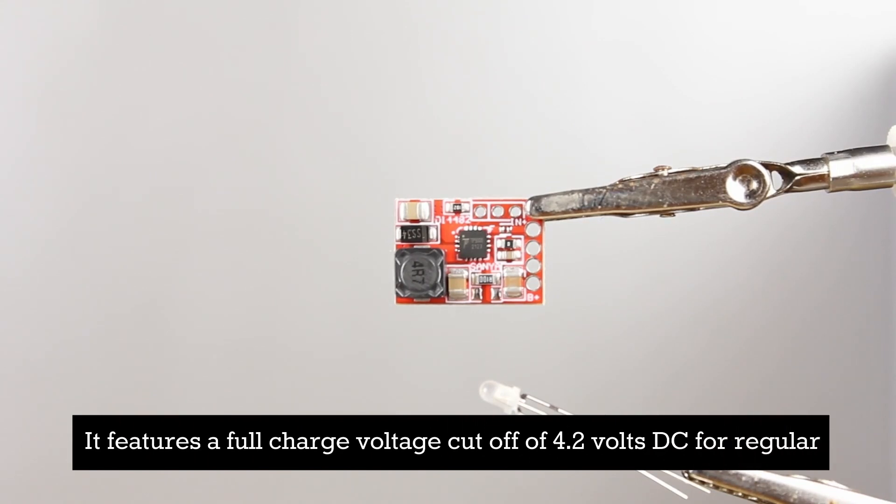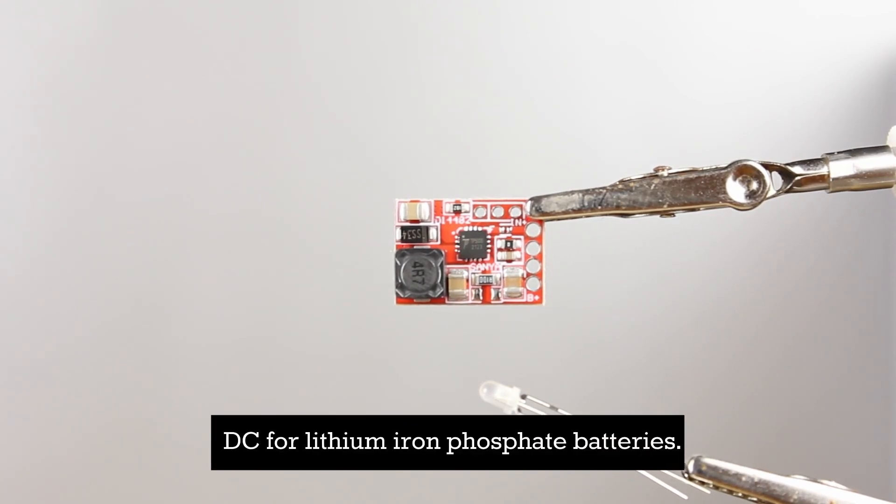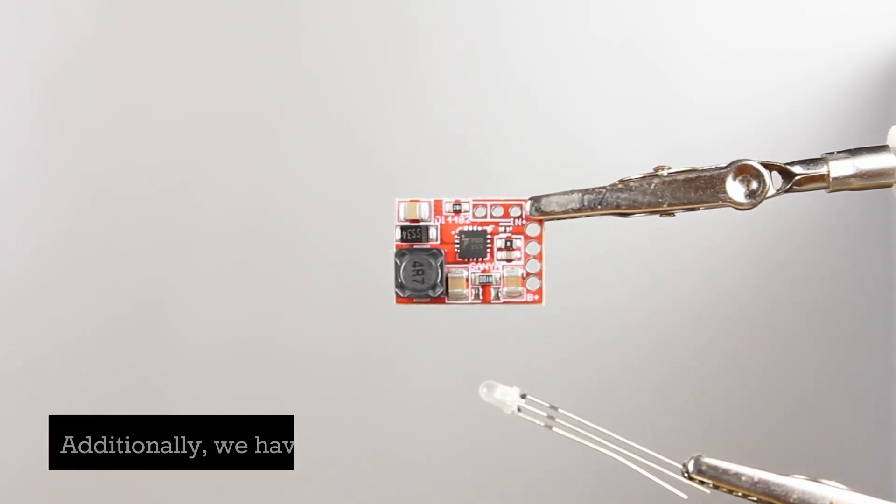It features a full charge voltage cutoff of 4.2 volts DC for regular lithium-ion batteries or 3.6 volts DC for lithium-iron phosphate batteries.